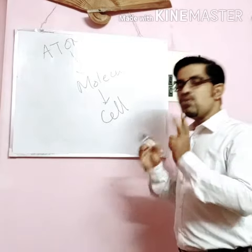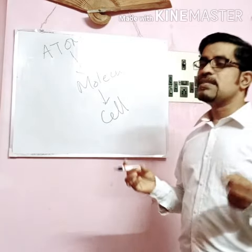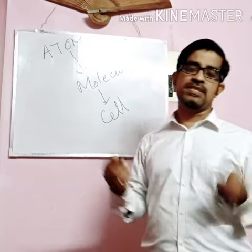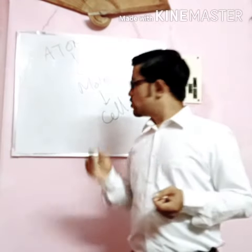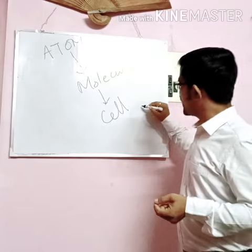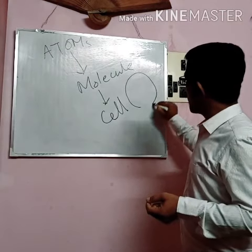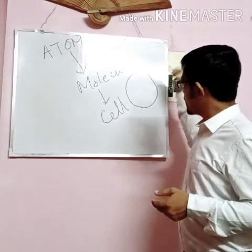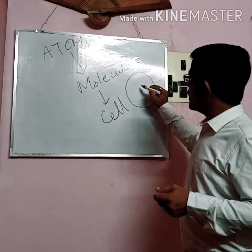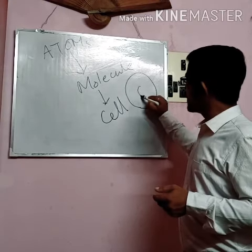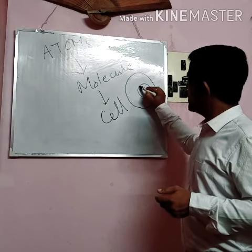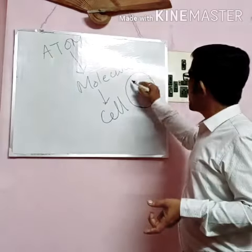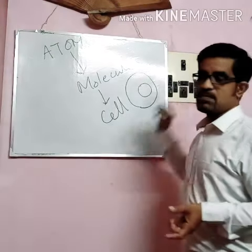Cell is the structural and functional unit of our system. This cell has a structure — the outer cellular membrane or cell wall will be there. In different types of cells, different structures will be there. Inside, one nucleus will be there; sometimes the nucleus will be multinucleated. Along with that, we have cytoplasm.